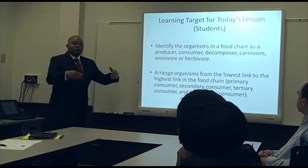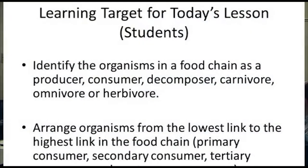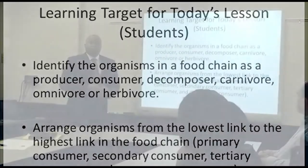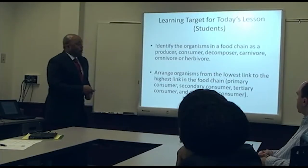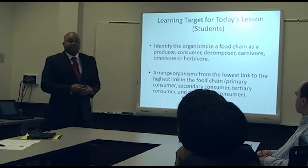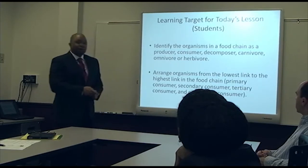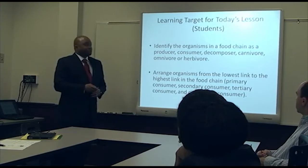The learning target, rephrased in student-friendly language, states: identify the organisms in a food chain as a producer, consumer, decomposer, carnivore, omnivore, or herbivore. Students should be able to label these components when viewing a food chain, and also arrange organisms from lowest to highest link — labeling primary, secondary, tertiary, and quaternary consumers.